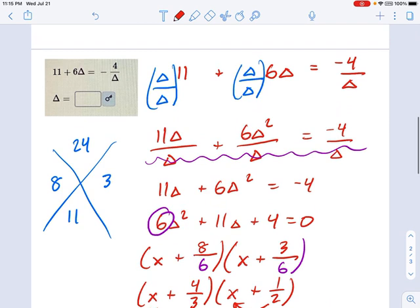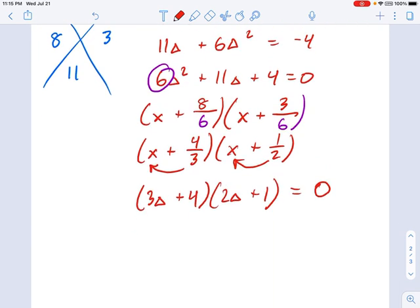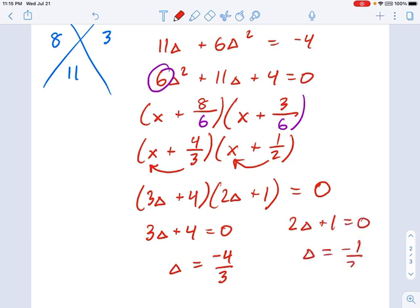This is equivalent to what we started with in the beginning, and now we just have to solve it. So I'm going to look at this and say, great, 3 delta plus 4 equals 0. That means delta equals negative 4 thirds. And 2 delta plus 1 equals 0. That means delta equals negative 1 half. These are my two solutions to the equation.